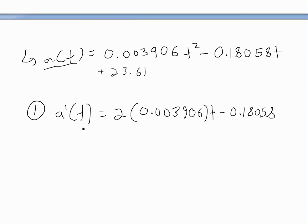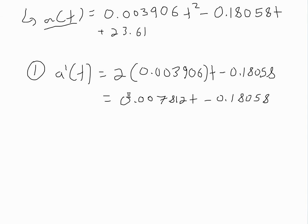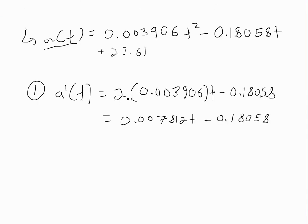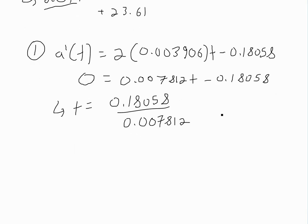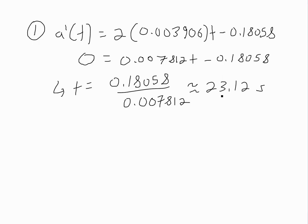Now we set it equal to zero. But before I get to that, I'll multiply this two out to get this function. So now we'll set it equal to zero. Solving for t, we just divide this out—move this over and divide: 0.18058 divided by this number is approximately equal to 23.12 seconds.